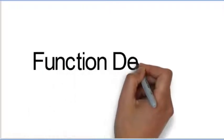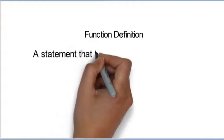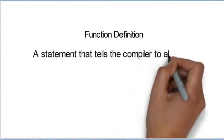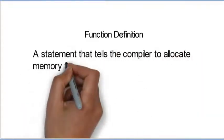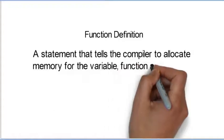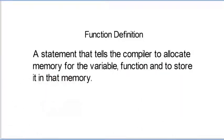Function definition. A function definition is a statement that tells the compiler to allocate memory for the variable functions and to store it in that memory.